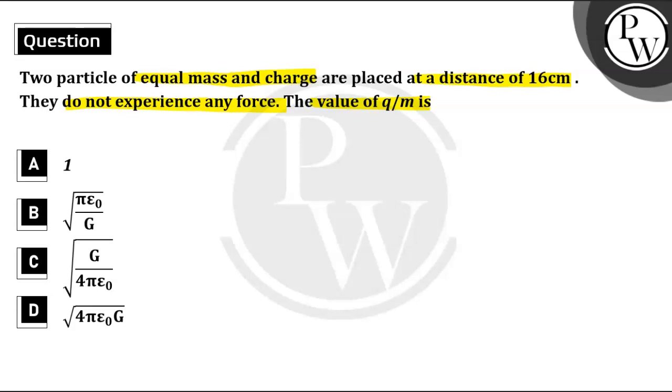So equationally, for the given two identical particles, we have to find out the ratio of Q by M. These are small particles, mass and charge are the same, and they are kept at a distance of 16 centimeters.